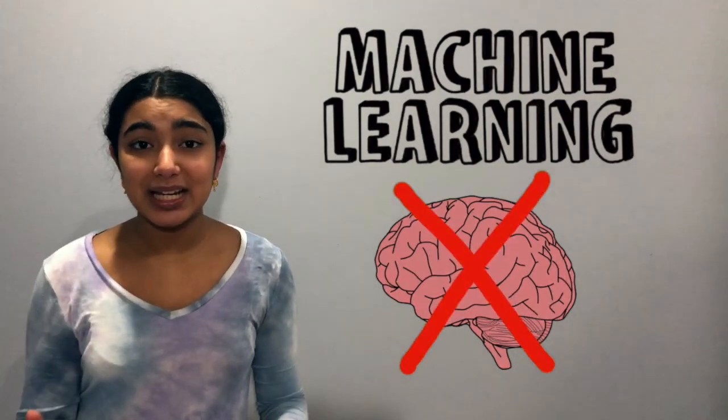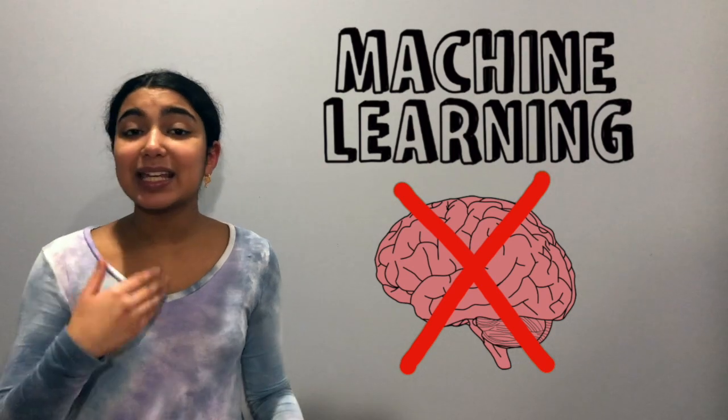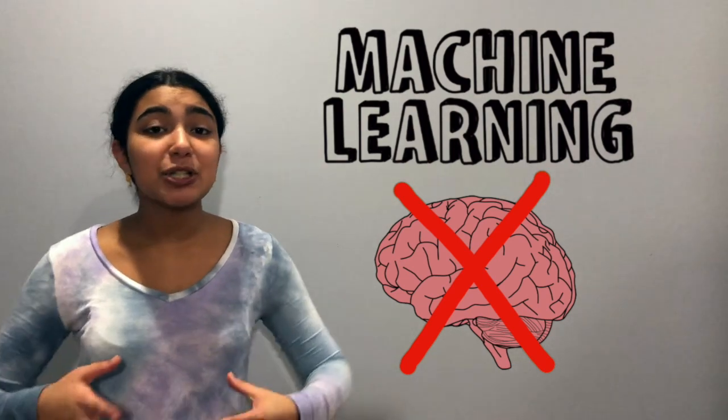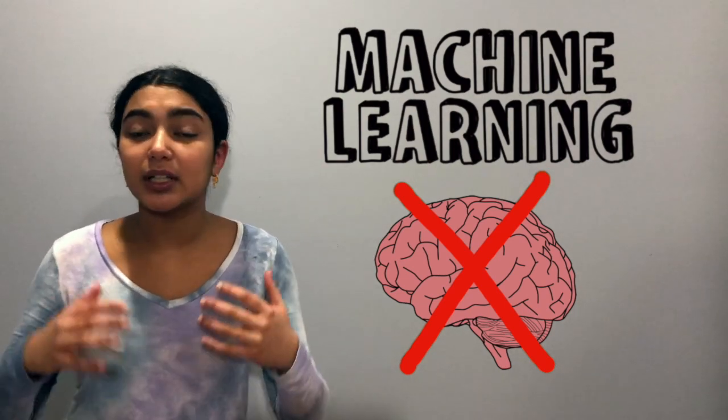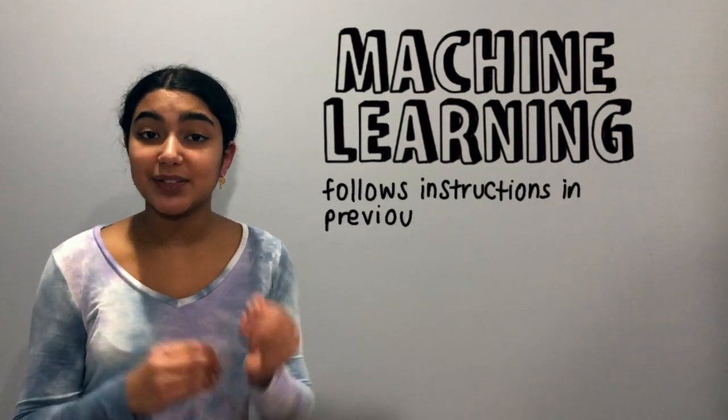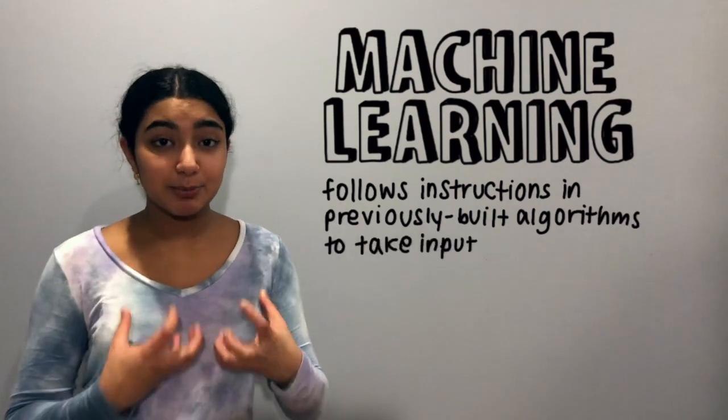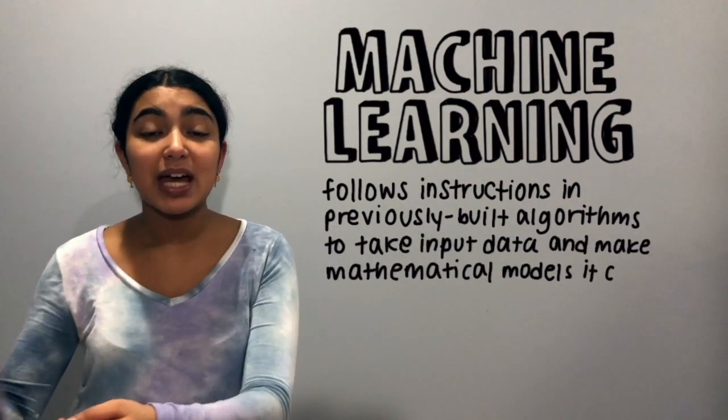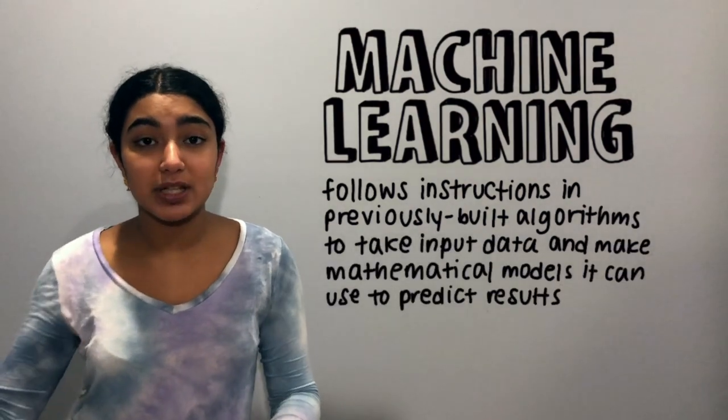Think back to my robot from the beginning. A computer doesn't have a brain. It can't make decisions like you and I can, and machine learning is not about the computer suddenly developing the ability to think for itself. Instead, it just follows instructions in previously built algorithms to take input data and make mathematical models that it can then use to predict future results.